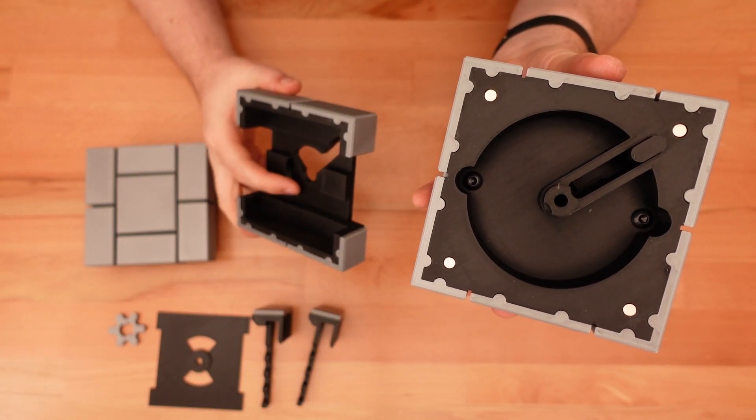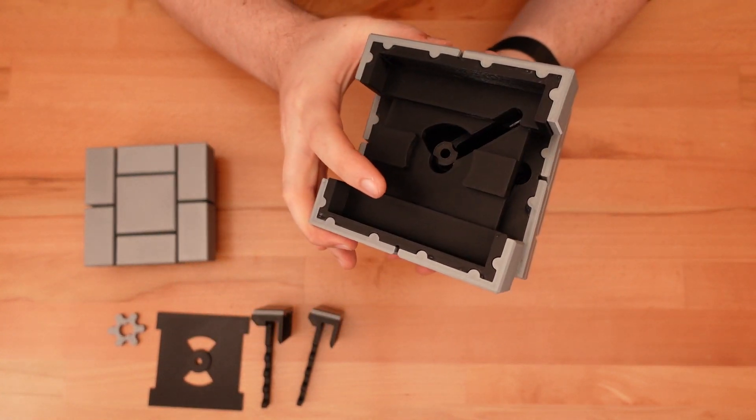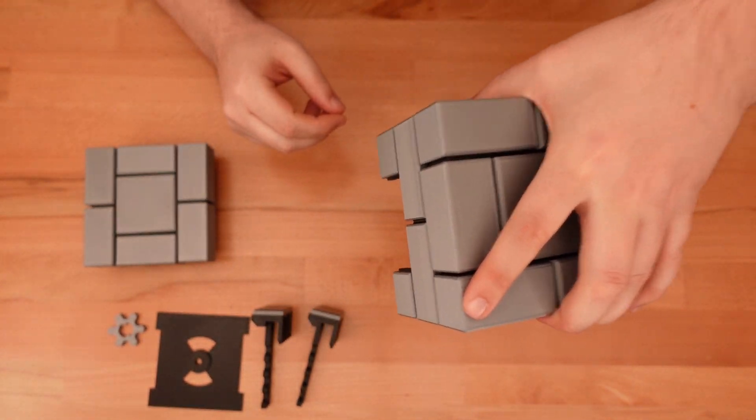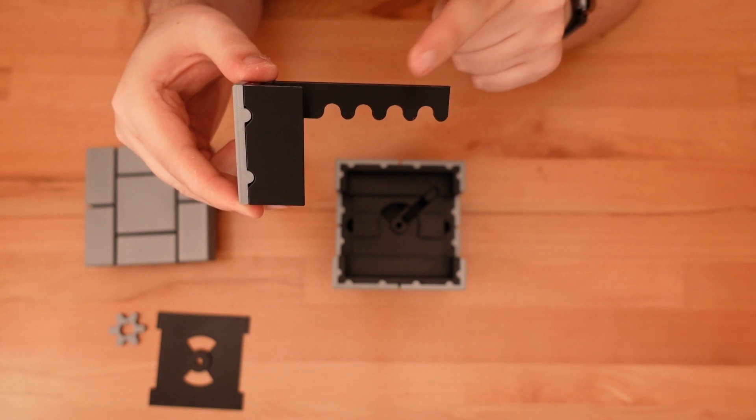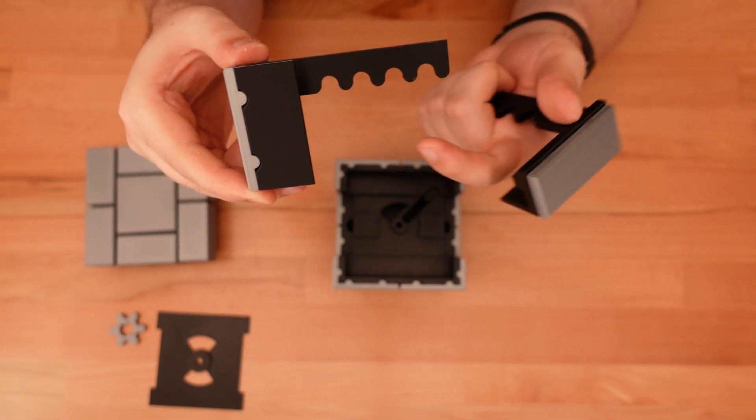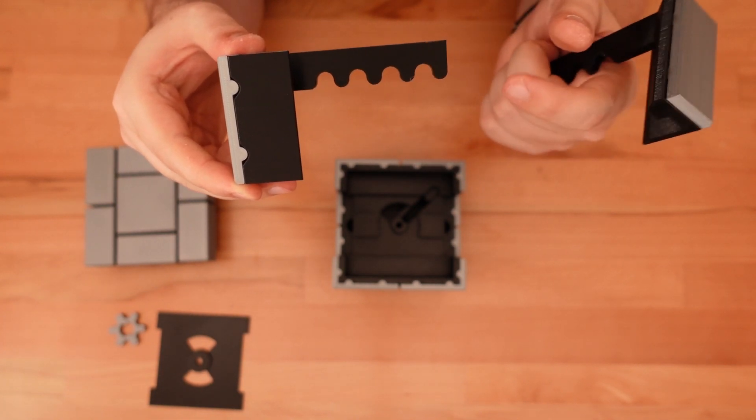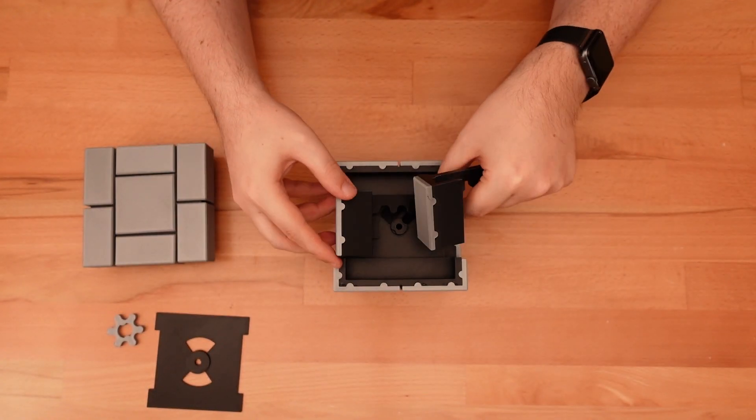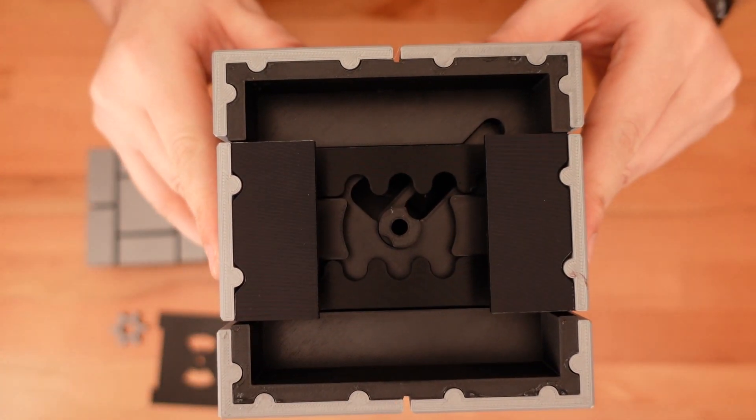If you've added all the magnets correctly, level three will snap right onto level two. Like this. Now we're going to add these two latches onto level three. The teeth of each latch should be facing the center of the level. Like so.